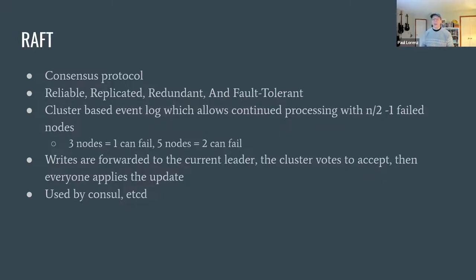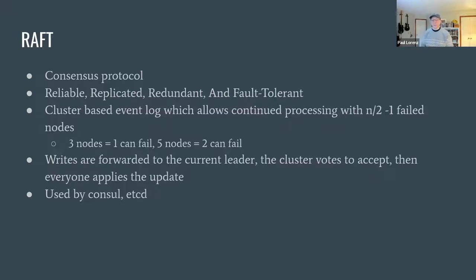Raft is a consensus protocol — it stands for Reliable Replicated Redundant and Fault Tolerant. It implements a cluster-based event log, meaning it has a series of events that happen in a specific order. When an event comes in, we want to apply it to the log. We send it out to the cluster, the cluster votes on it, and if we get a majority — quorum — we can apply it to the log. We always need more than half of the nodes to agree. If you have one node and it fails, you've lost it all. If you have two nodes and one fails, you can't get more than half. So you need at least three nodes. Generally you do things in odd numbers: three nodes — one can fail; five nodes — two can fail; seven nodes — three can fail.